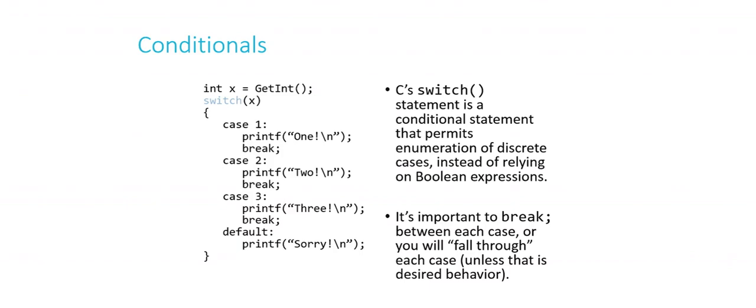So int x equals get int. Basically what's happening is I'm at the terminal asking the user to type in a number. And here I'm switching what I'm doing depending on what the user typed at the prompt. So if they typed 1, I print out 1 and then I break. If they typed 2, I print out 2 and then I break.